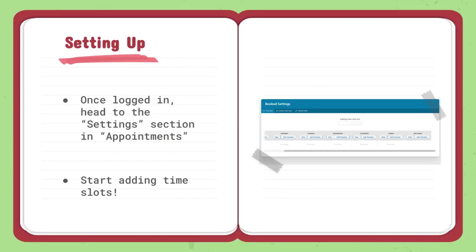When we're setting up our schedule, assuming that we're logged in already to the website, we would first head to the Settings section in Appointments, and then we will see a full week's worth of your schedule. You would then set up time slots on days where you prefer to tutor. For example, if I would like to tutor at 4 o'clock on a Saturday, I would click Add Time Slots under Saturday, set the time and how long.